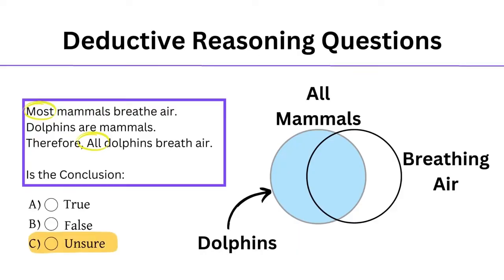A lot of people might get this wrong if they bring their prior knowledge to the test. A defining aspect of a mammal is breathing air, so it seems like a reasonable assumption. But in this question, you must bring no prior knowledge, and if it's not explicitly stated, do not assume.